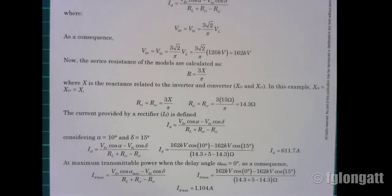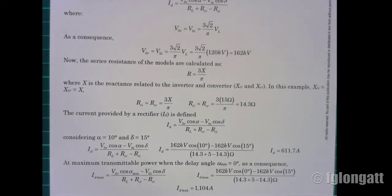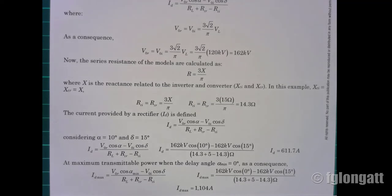For the second question — the maximum current in the DC link — we achieve maximum power transfer when the firing angle alpha is equal to zero degrees. Setting alpha to zero and substituting the numbers, the maximum current that can be transmitted in this HVDC point-to-point link is 1104 amps.